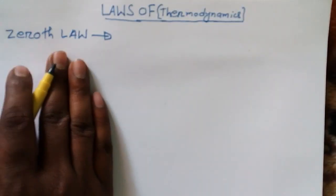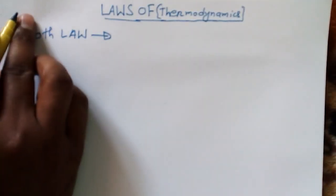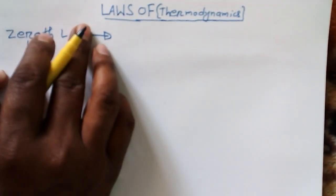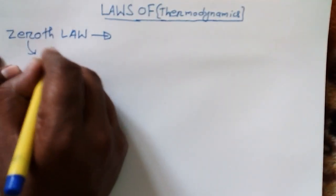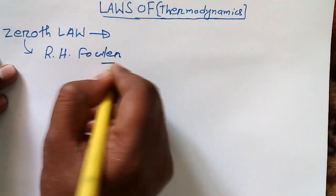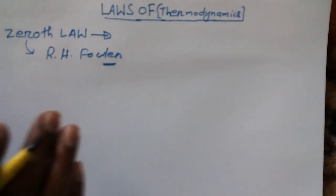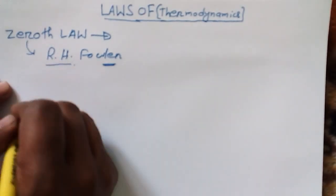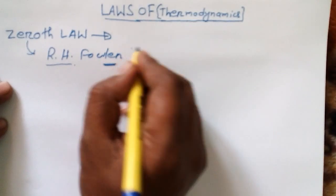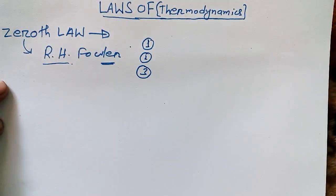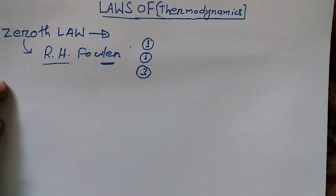So what is the Zeroth Law? This law was provided by R.H. Fowler. For your information, this law was developed after all three other laws — the First Law, Second Law, and Third Law. Because it is the most basic law, it is known as the Zeroth Law.